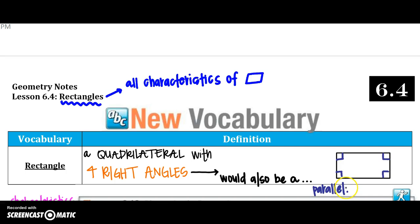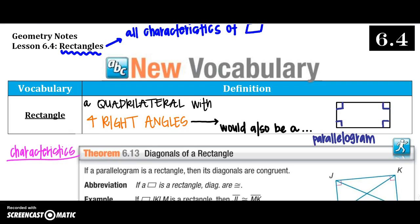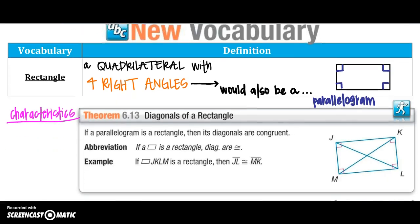All righty, so the first theorem, first characteristic we are going to talk about with our rectangle is: if a parallelogram is a rectangle, so we're putting it in the family, we have the family name, then the diagonals are congruent.